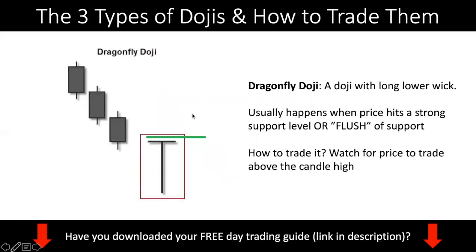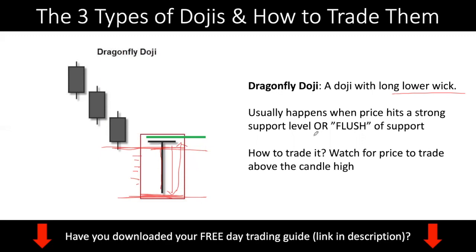Now let's move on to the second kind of doji, which is the dragonfly doji. This is a doji with a long lower wick — price went down, but in the end came back up. This usually happens when price hits a strong level or there is a support, and price is trying to flush all the stop losses below the support. I have a comprehensive video about this concept — about a doji or pin bar being either a bounce off a strong level or a flush off a key level — so I'll leave the link in the top right.